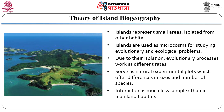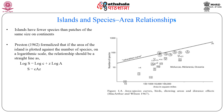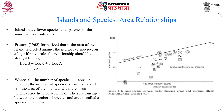Alexander von Humboldt in 1807 stated that larger areas harbour more species than smaller ones. Regarding island and species-area relationships: what determines the number of species on an island? Islands typically have fewer species than patches of the same size on continents, and large islands tend to support more species than smaller islands. Preston in 1962 formalized that if the area of the island is plotted against the number of species on a logarithm scale, the relationship would be a straight line expressed as S = CA^Z, where S is the number of species, C is a constant meaning the number of species per unit area, A is the area of the island, and Z is a constant which varies between different taxa. This relationship is called the species-area curve.